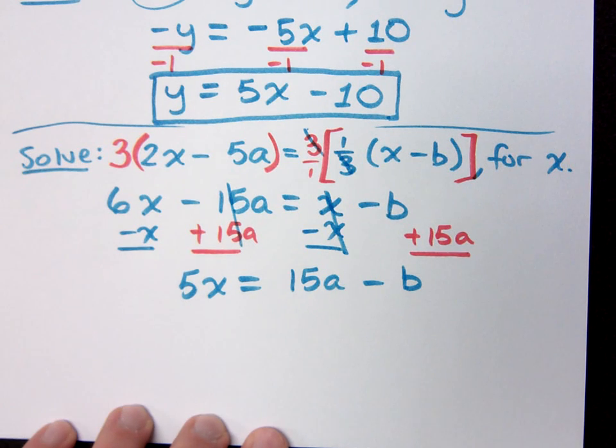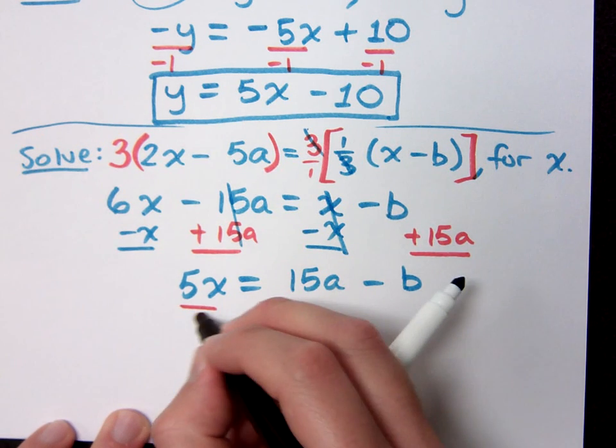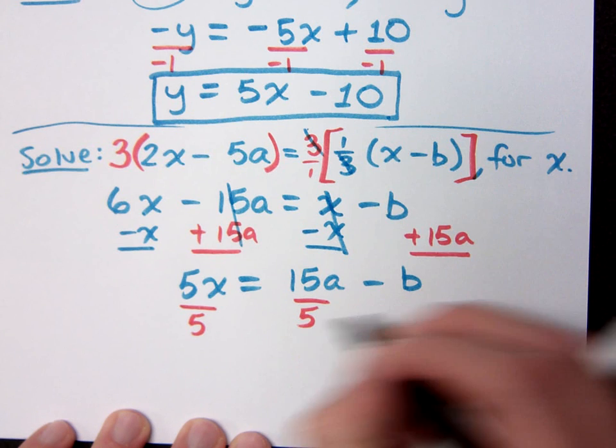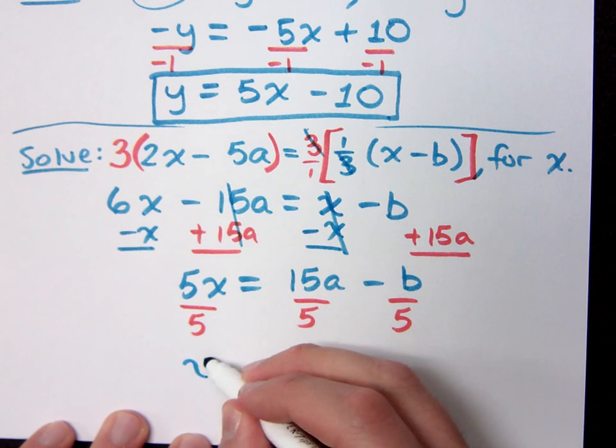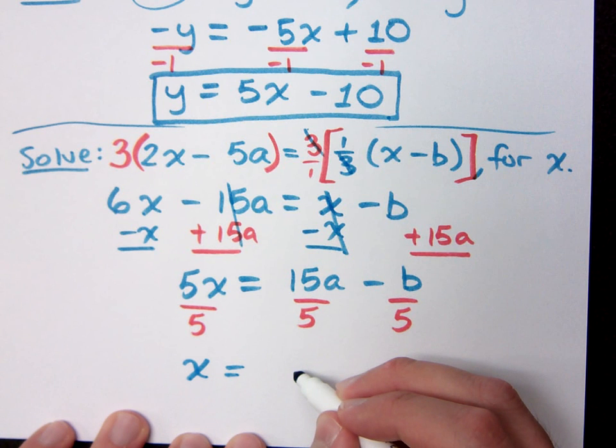And then how do I finish this problem? Divide by 5. Divide everything by 5. And then simplify. So we have x equals what? Negative 3a. Whoop. It's a positive 3a. Negative 3a.